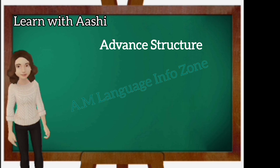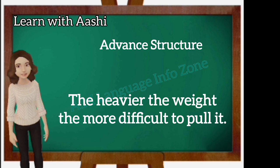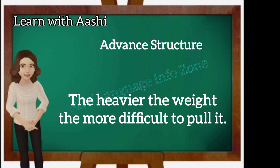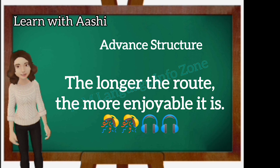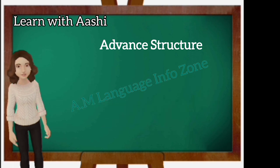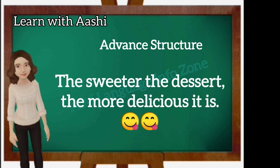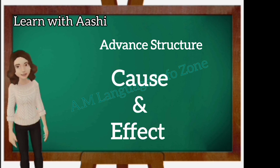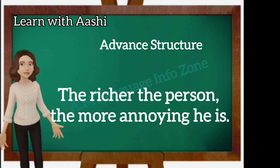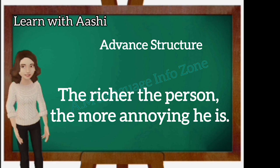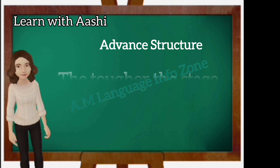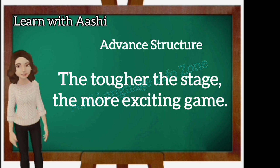Let's take some more examples. The heavier the weight, the more difficult to pull it — or, the more difficult to move it. The longer the route, the more enjoyable it is. The sweeter the dessert, the more delicious it is. In these sentences you have noticed that we have a cause and effect. The richer the person, the more annoying he is — here the cause is that someone is rich, and the effect is he is more annoying. The tougher the stage, the more exciting the game — the cause of excitement is that the stage is tougher. Wonderful advanced comparison!